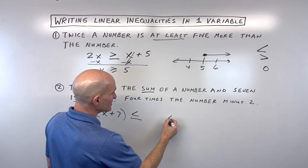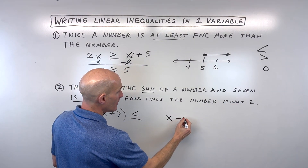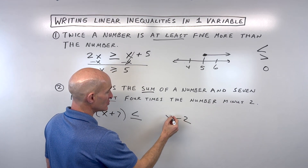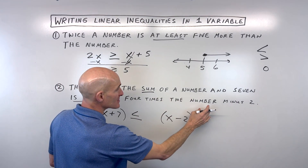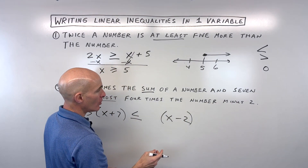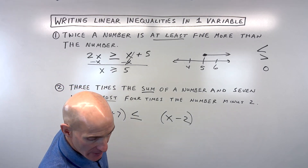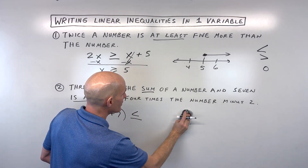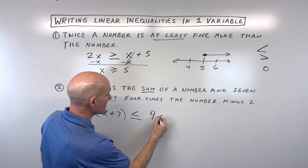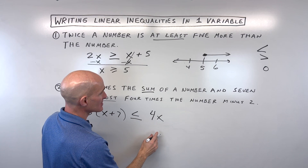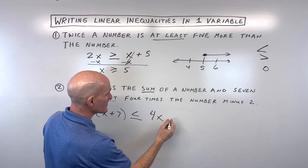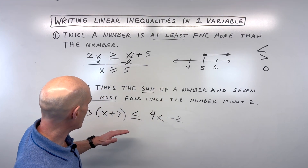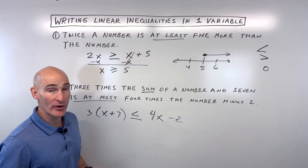So the full inequality is 3(x + 7) ≤ 4x − 2. The number is x, minus two means subtract two, and four times the number gives us 4x.